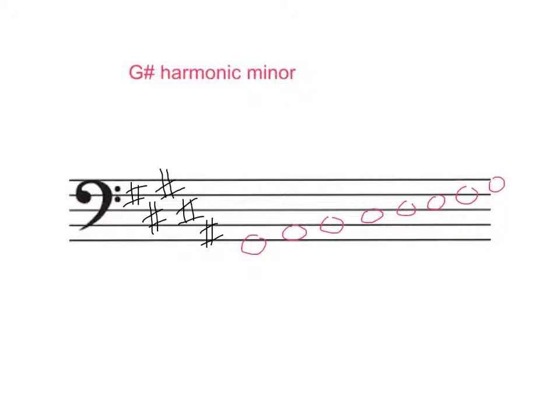So now we have to find the 7th again. 1, 2, 3, 4, 5, 6, 7. Okay. It's right here. And that's an F. And if you look in the key signature, F is already sharp. So how do you raise a note that's already sharp? Well, you sharpen it again. And that's called a double sharp. And the symbol for that is not two sharp signs, as you might suspect, but it's actually an X.